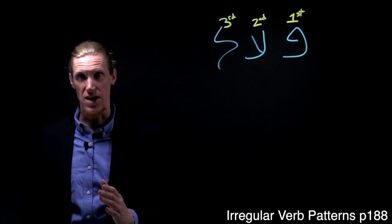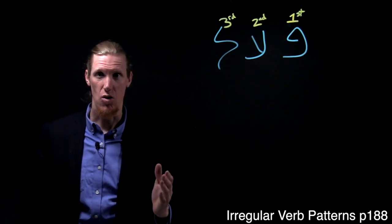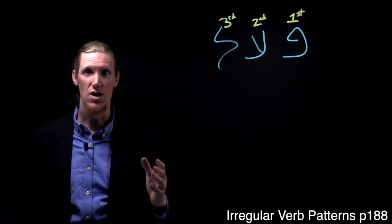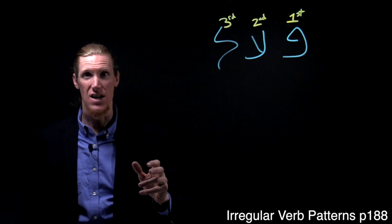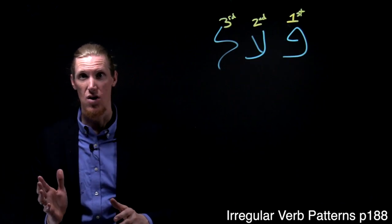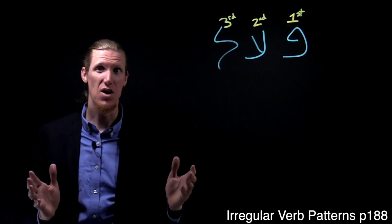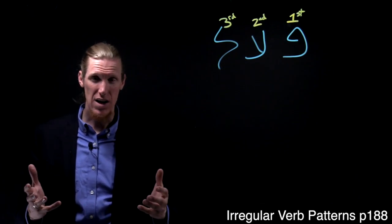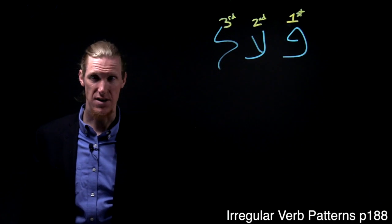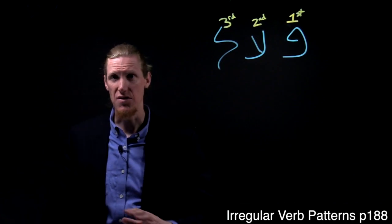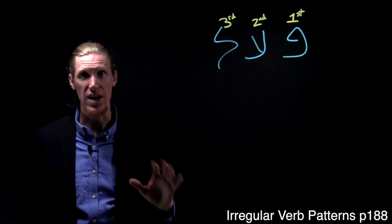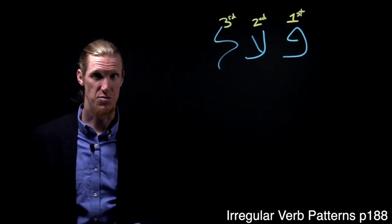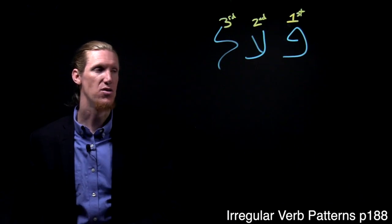But periodically, a weak letter or a guttural letter will find its way into the three-letter root, and it will modify either the vocal pattern or perhaps even some of the root letters that remain visible, and then it becomes more challenging to know what you're looking at. So this video will give you an introduction to those irregular verb patterns based on what different kinds of letters appear in the root.